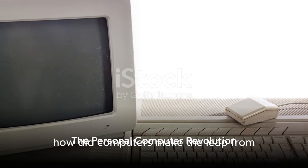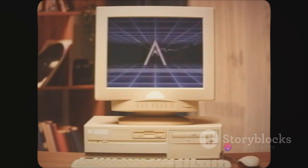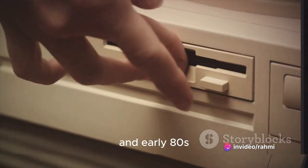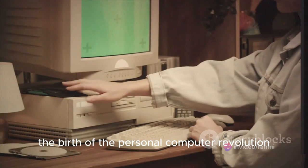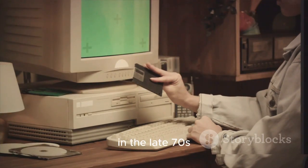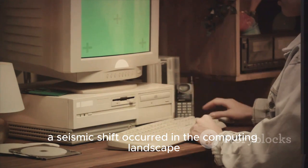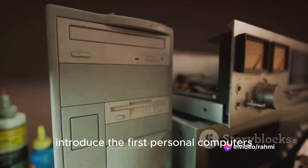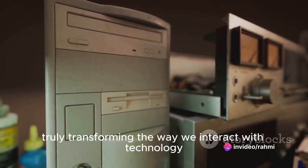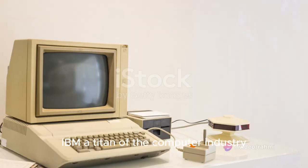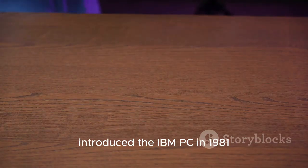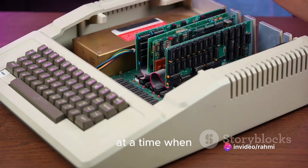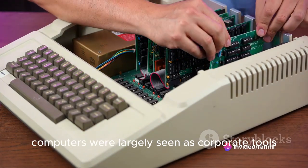How did computers make the leap from scientific laboratories to our homes and offices? This question takes us back to the late 70s and early 80s, a time that marked the birth of the personal computer revolution. In the late 70s, a seismic shift occurred in the computing landscape. Companies like IBM and Apple introduced the first personal computers, truly transforming the way we interact with technology. IBM, a titan of the computer industry, introduced the IBM PC in 1981, a machine designed for individual use at a time when computers were largely seen as corporate tools.